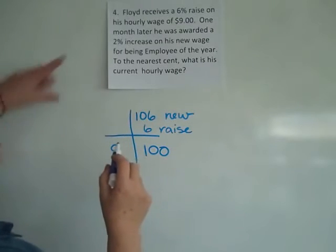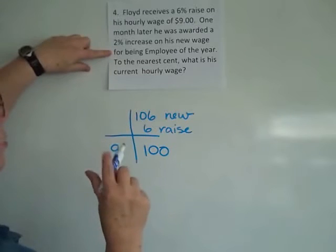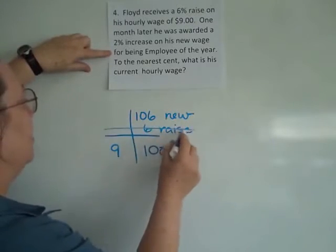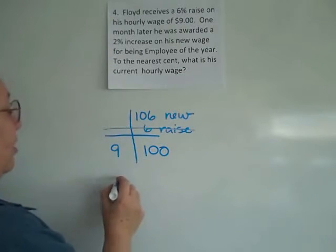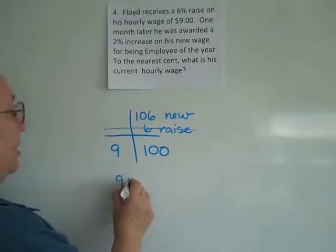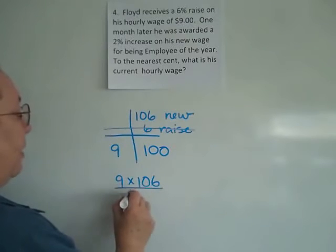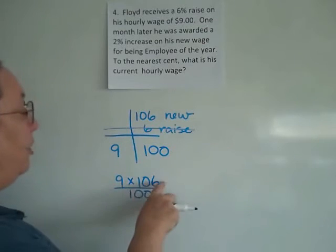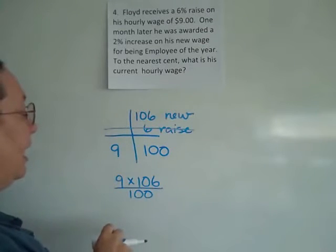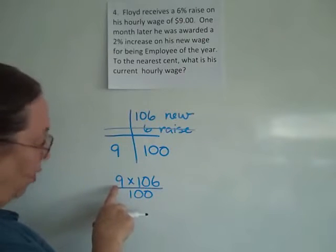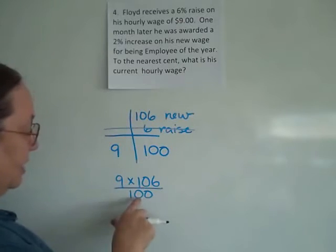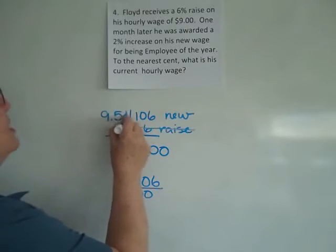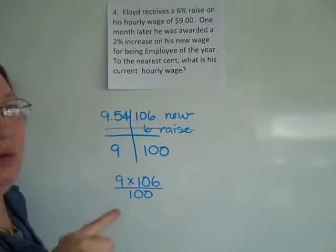I need to know not what his raise was, but what his new salary is. So, using a calculator, take 9 times 106 divided by 100. On your calculator, you do not have to hit equal at the end — you can do it in a straight row: 9 times 106 divided by 100. That gives me $9.54 for his new wage.